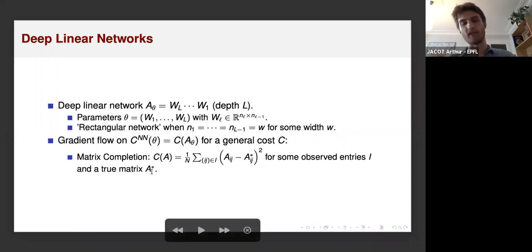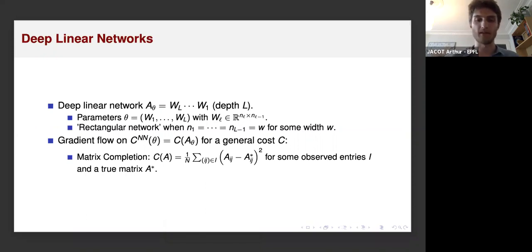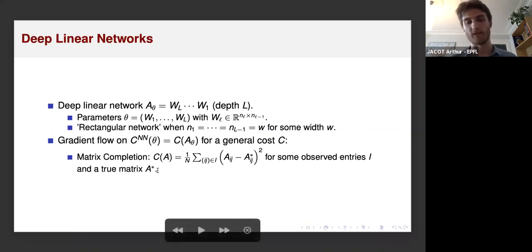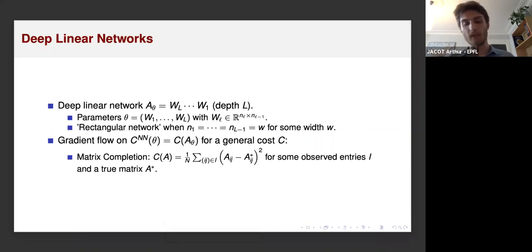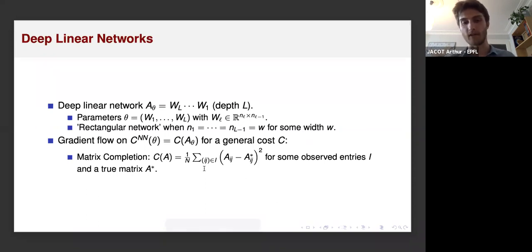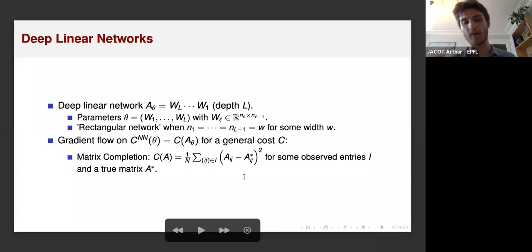To generalize in this setting, first you need the matrix A* to actually be low rank, because if A* is not low rank there's little chance to recover the missing entries. Then, assuming A* is low rank, you need to find an algorithm to actually find a low-rank matrix that fits the observed entries — and this is a very hard problem; we know it is NP-hard.